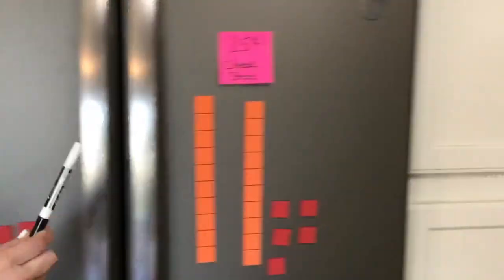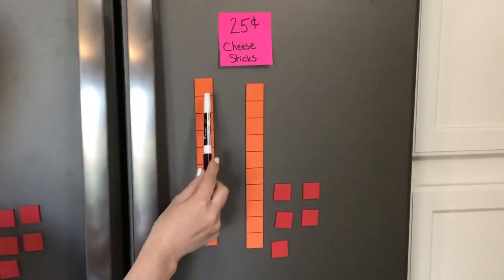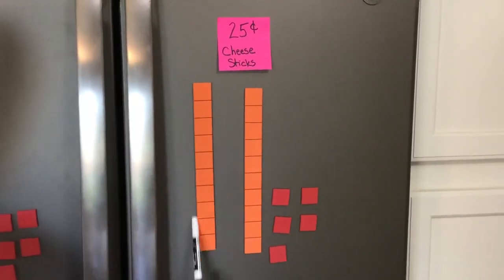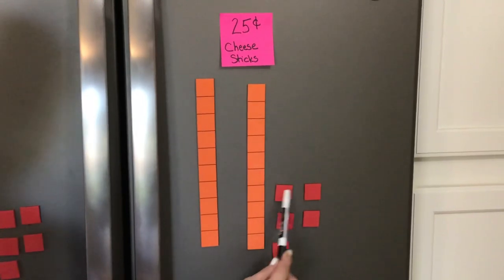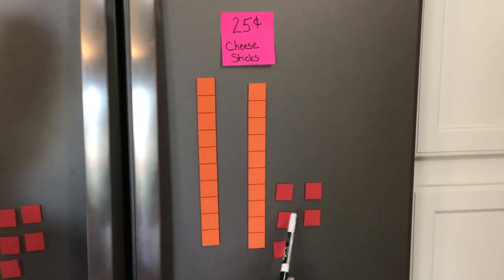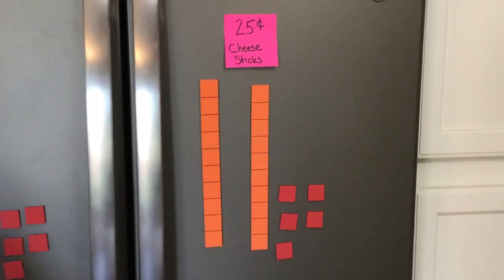And my cheese sticks are $0.25, so I have $10, $20, $21, $22, $23, $24, $25.